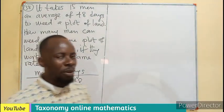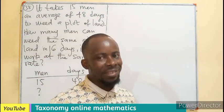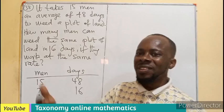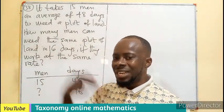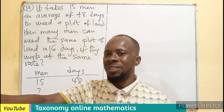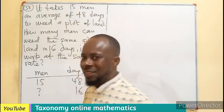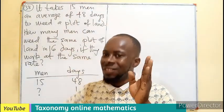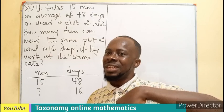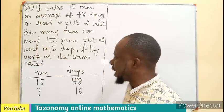For you to be able to use proportion, you have to know whether it is direct. Direct, if one quantity increases, the other will also increase along. If one quantity decreases, the other also decreases. But in the indirect, it is the opposite. One is increasing while the other is decreasing. The first one is decreasing, the other is increasing.